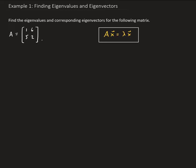We want to solve this system, particularly for a non-trivial solution — we're not interested in X equal to zero. We start by setting this equal to zero, giving us AX minus lambda X equals the zero vector. We can factor out X to get A minus lambda I times X equals zero.